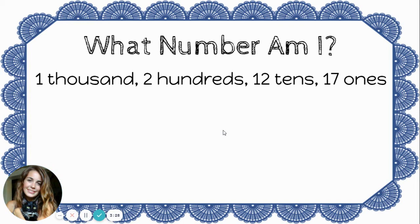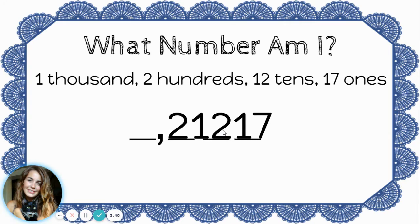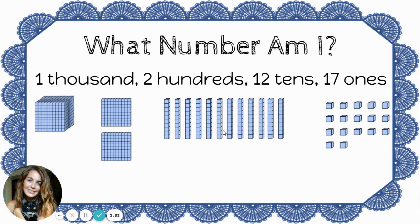Let's try one more using the blocks. This time I have one thousand, two hundreds, twelve tens, and seventeen ones. When I fill in my numbers — seventeen ones, twelve tens, two hundreds, one thousand — I know that's incorrect. This time I have two places where I've tried to cram a two-digit number into one place. Let's take it to the blocks. Let's start with the ones. Seventeen ones — that's too many to put in the ones place, so I need to turn some of these ones into a ten. Let's take ten of them and bundle them together to create another ten.